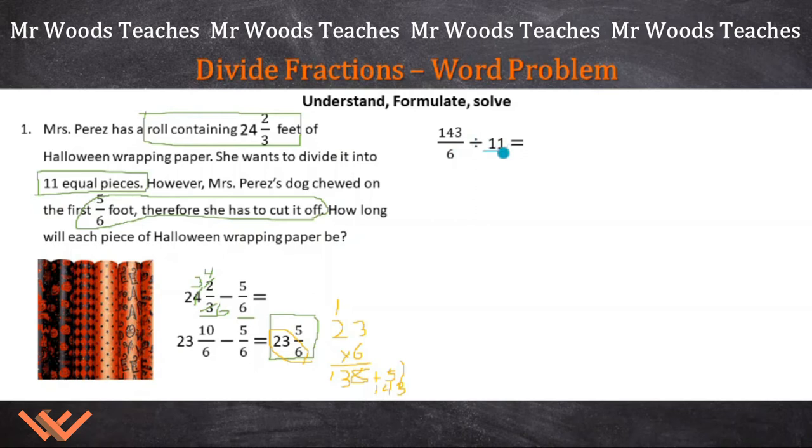If you remember, whole numbers can be shown as a fraction, so it's 11/1. That's still 11. But now we have to solve. So we're going to keep that 143/6, switch the sign to multiplication, and then flip this fraction. Voila! We have 143/6 times 1/11. Now we can multiply across. So 143 times 1 is 143, and it's divided by 6 times 11, which is 66.